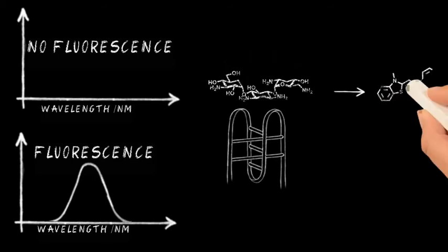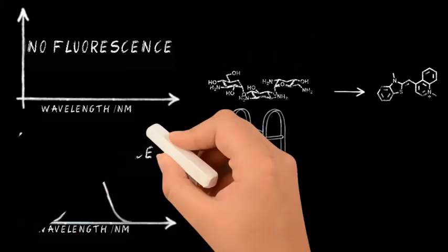So we've displaced the thiazol orange, kicked it off. And what happens then is that we then lose that fluorescence.